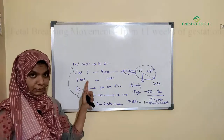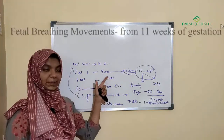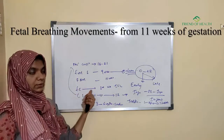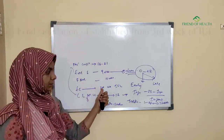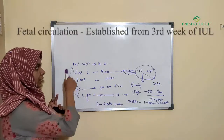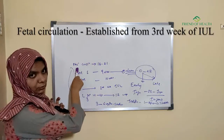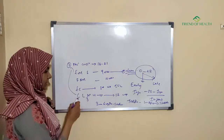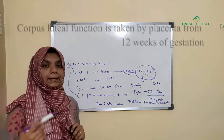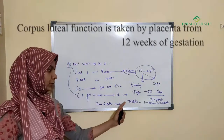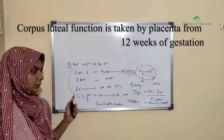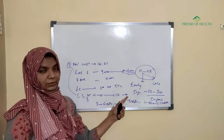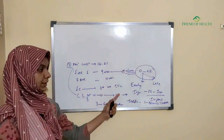Fetal breathing movements start from 11 weeks of gestation. Fetal circulation starts from the third week of intrauterine life — write this after placental circulation for easy reading. Corpus luteal function is taken over by the placenta from 12 weeks of gestation. Make a note of this.